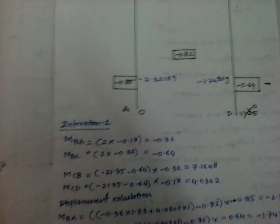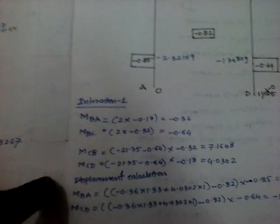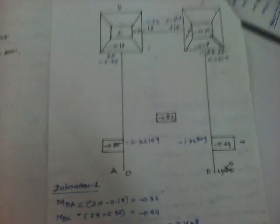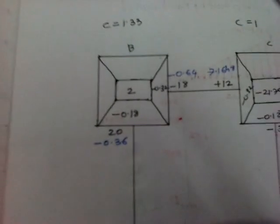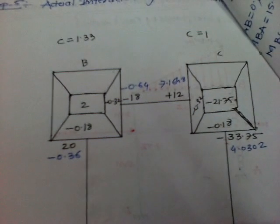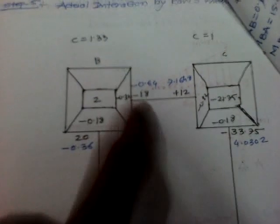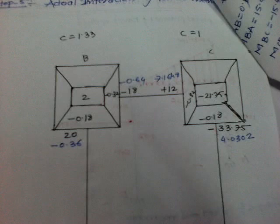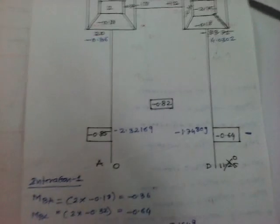Now the iteration is like that. First two step, this iteration is same. 2 multiply by minus 0.18, so we get the value of minus 0.36. 2 multiply by minus 0.32, so we get the value of minus 0.64. Then 21.75. Then for the moment of CB, minus 20.75 minus 0.64 multiply by minus 0.32, so you get the value of 7.1468. Similarly all this value have happened.